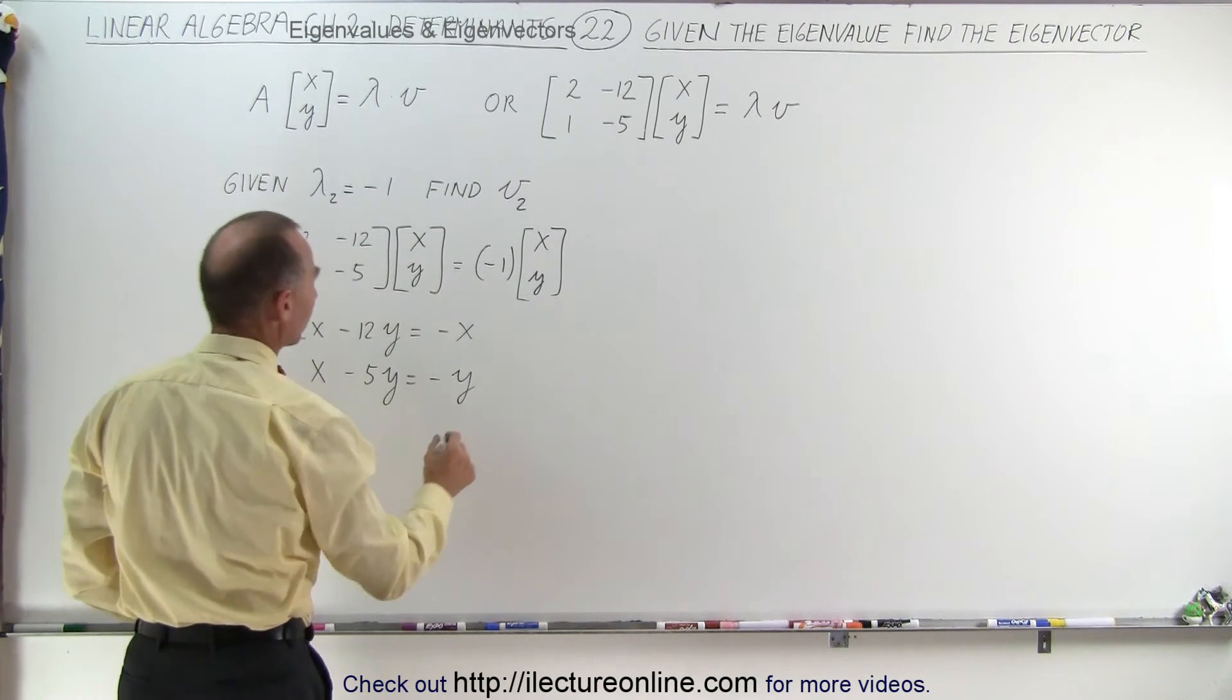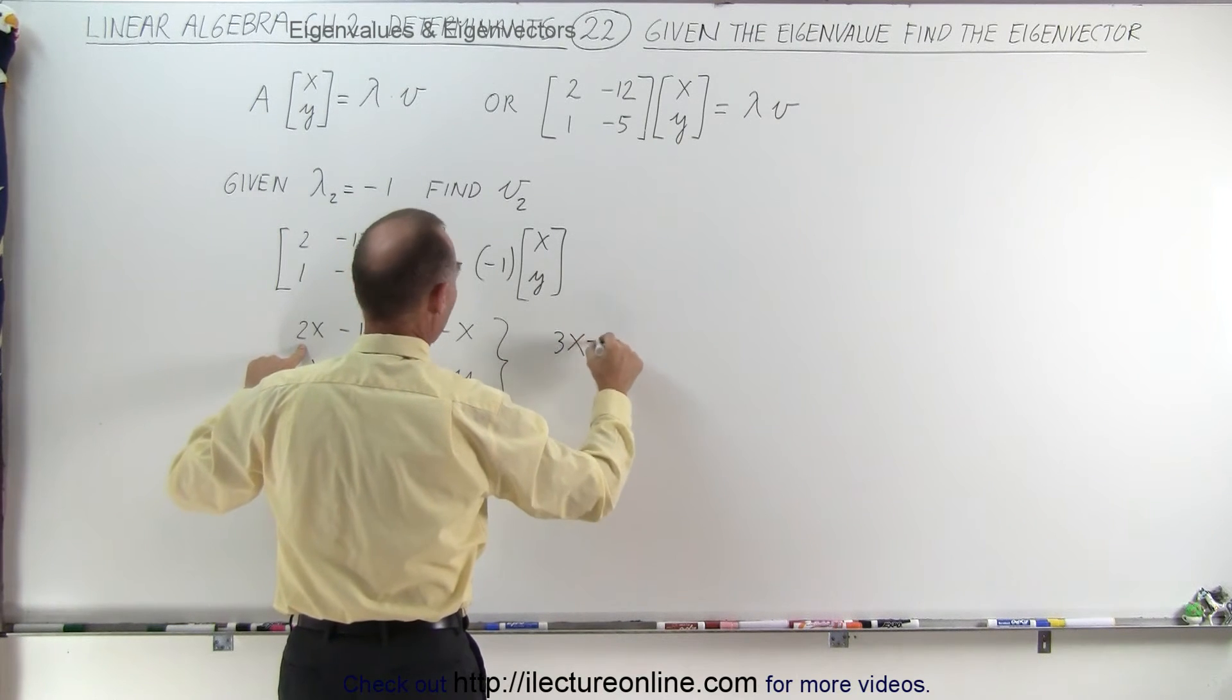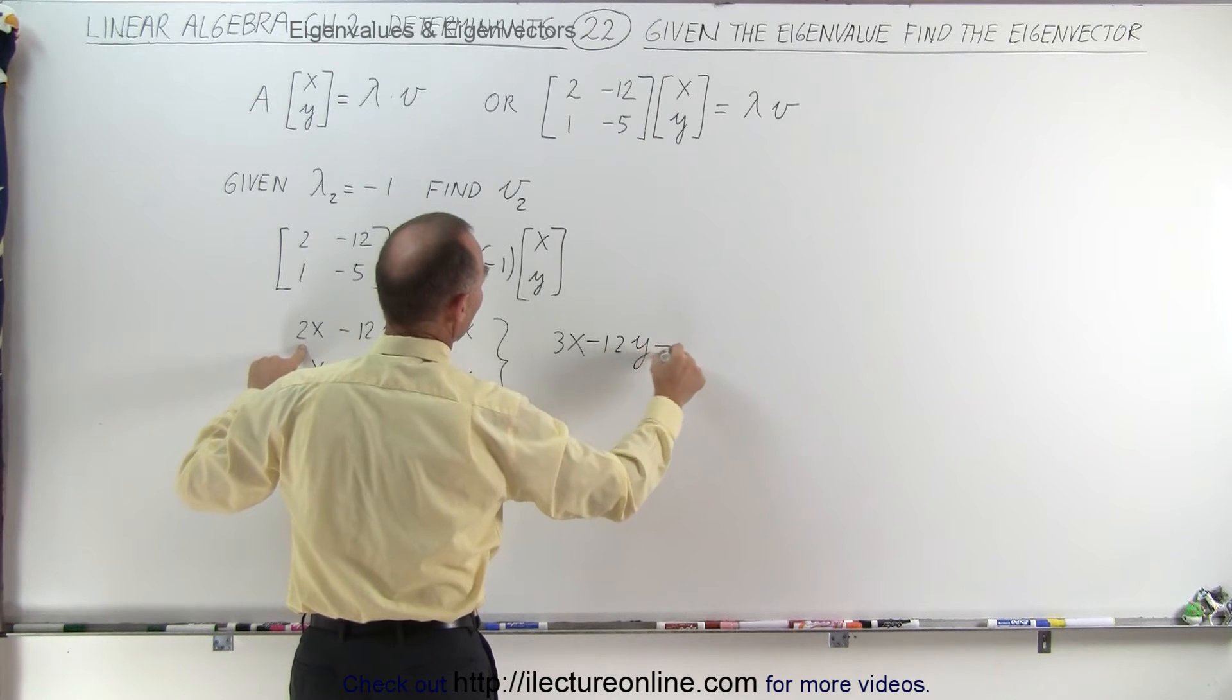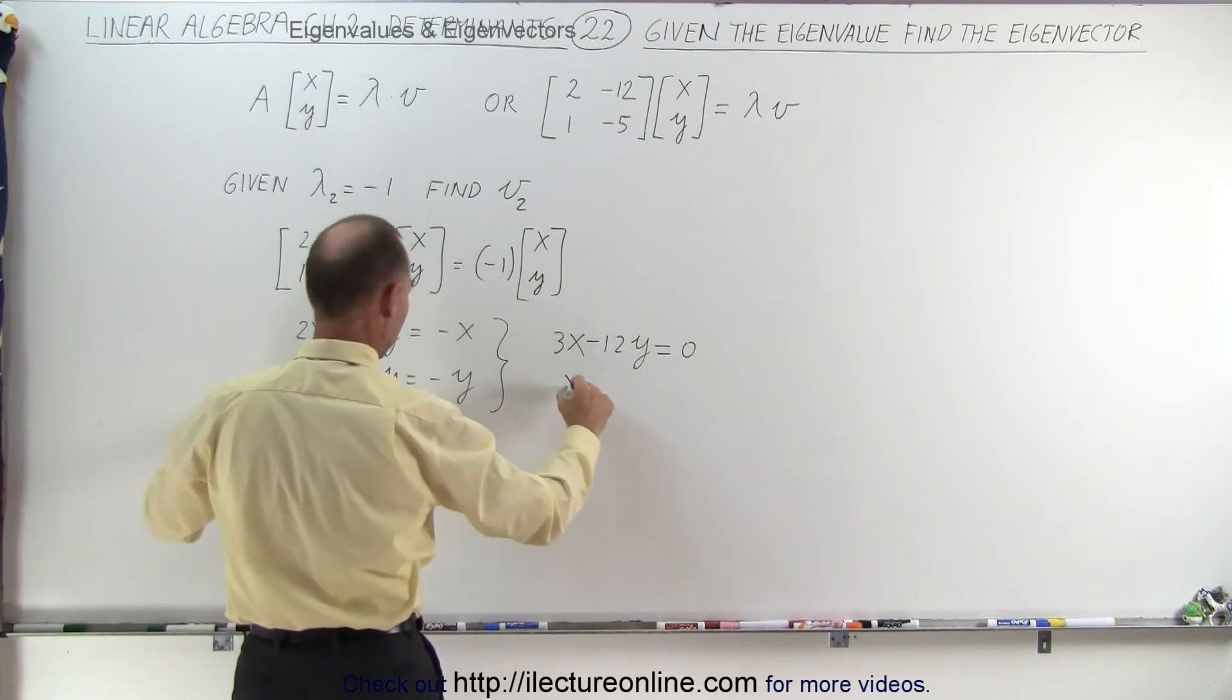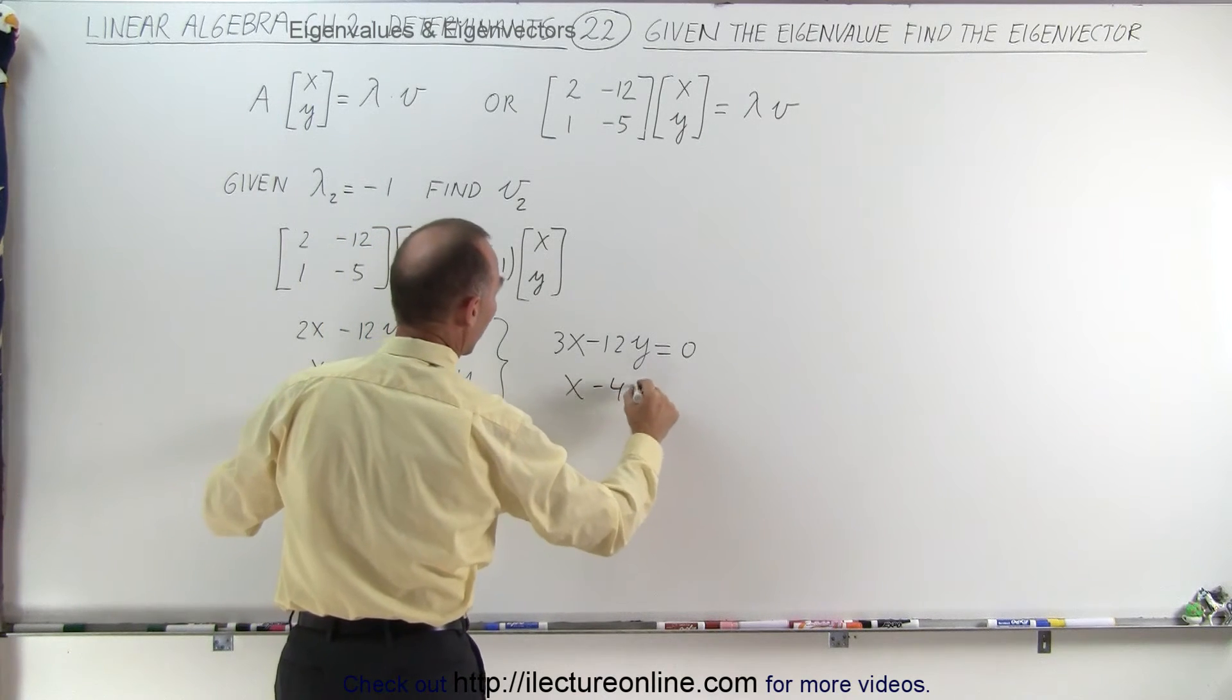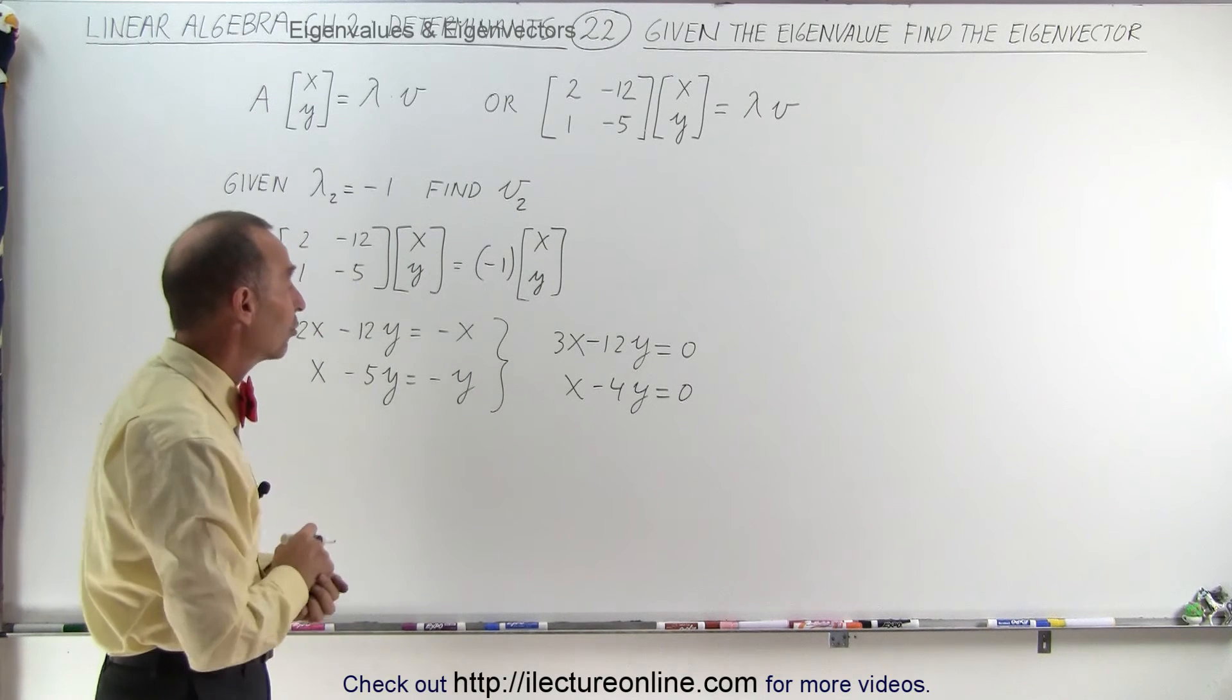So these two equations can then be simplified to give us 3x minus 12y equals 0, and here we get x minus 4y equals 0. And now we have to solve these two simultaneous equations.